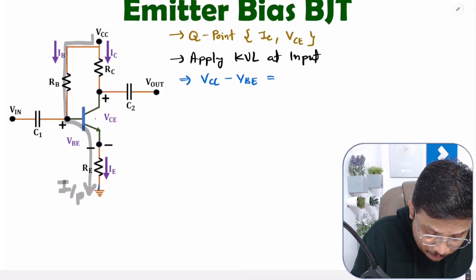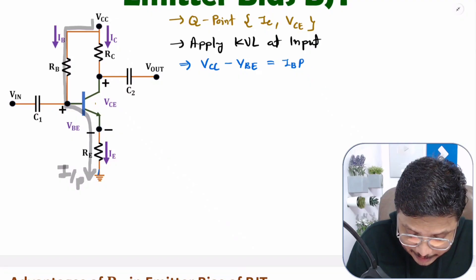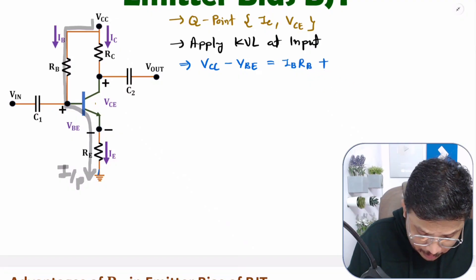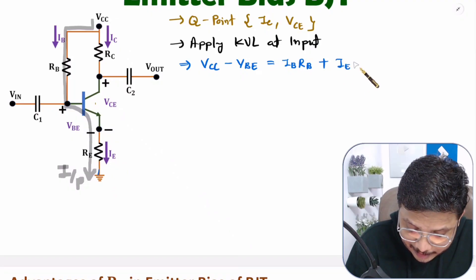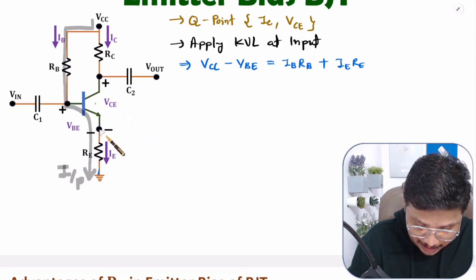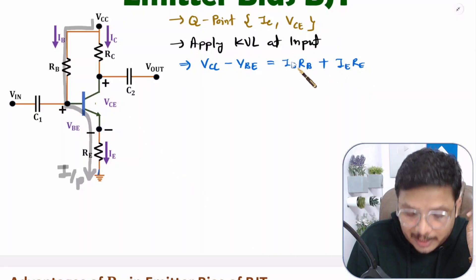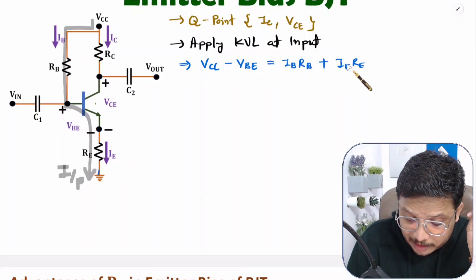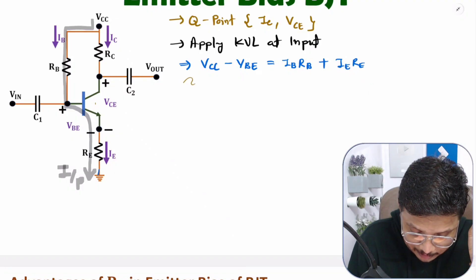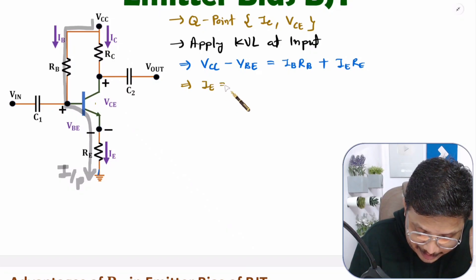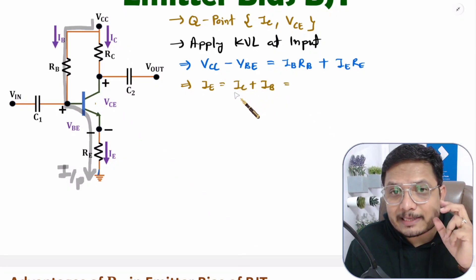The voltage drop across RB is IB times RB, and the voltage drop across RE is IE times RE. In this equation we need to convert IE in terms of IB. IE equals IC plus IB, and IC equals beta times IB.